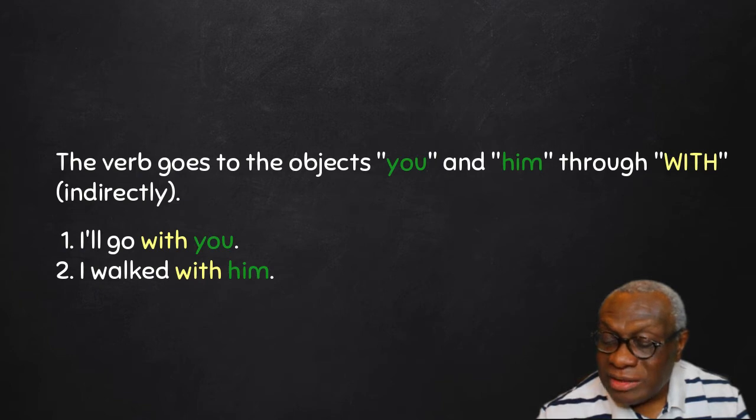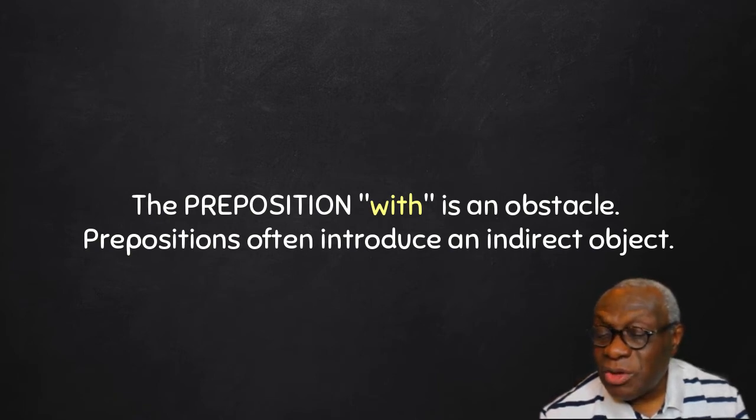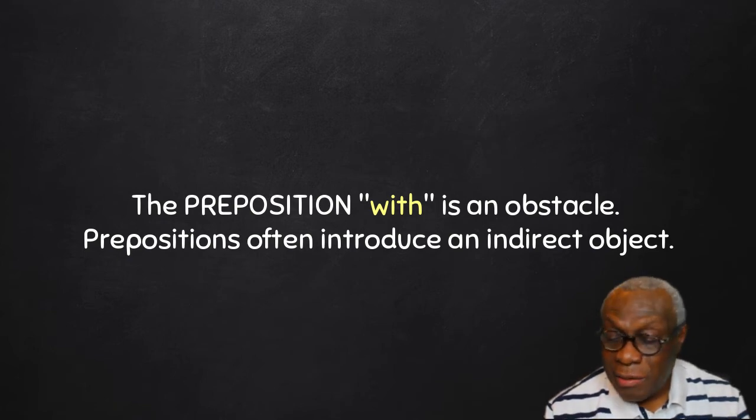But we can start reading about prepositions. So the preposition with is what I will call an obstacle. When you see an obstacle, a preposition between verb and object, you have an indirect object. So that is the first part of our lesson on the indirect object.